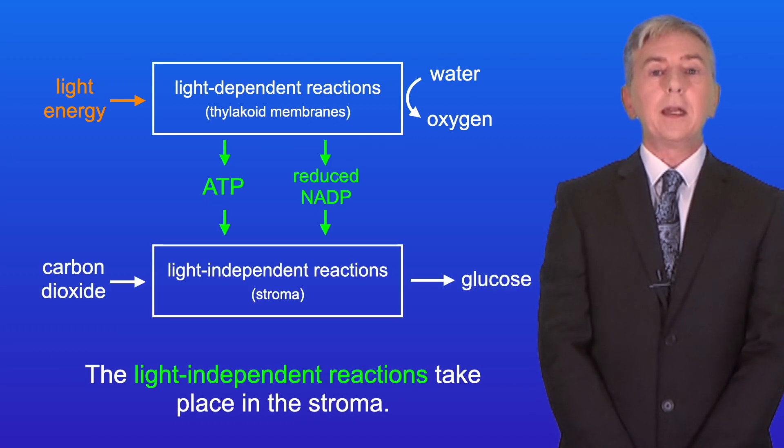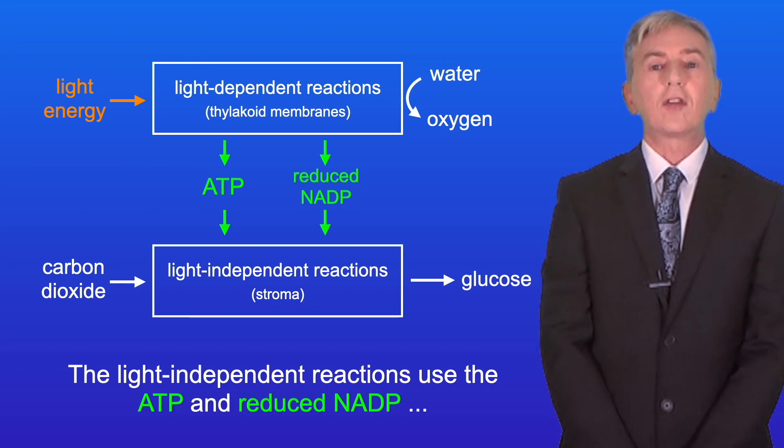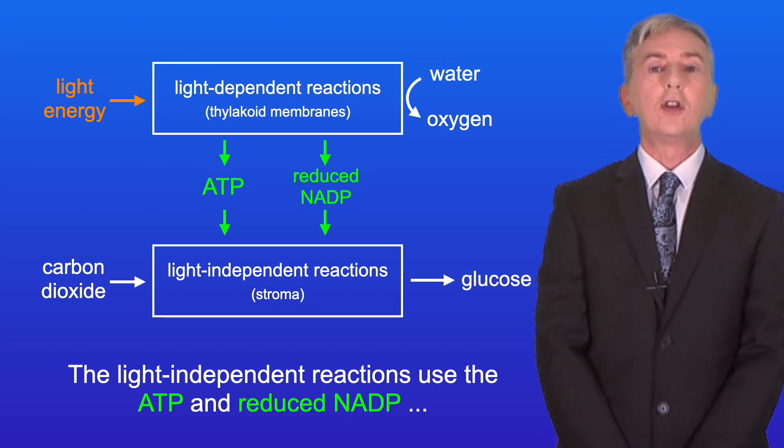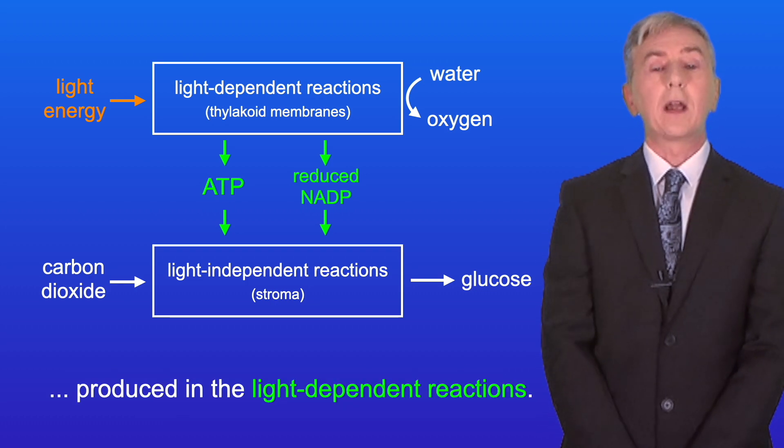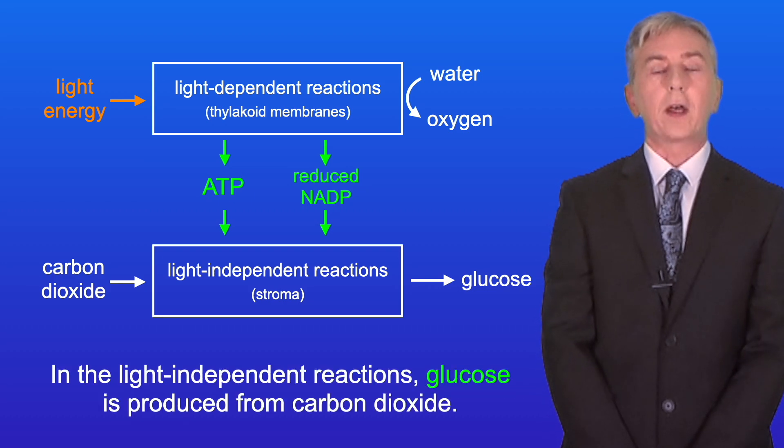Now the light-independent reactions take place in the stroma, and the light-independent reactions do not require light to function. The light-independent reactions use the ATP and reduced NADP produced in the light-dependent reactions. And in the light-independent reactions, glucose is produced from carbon dioxide.